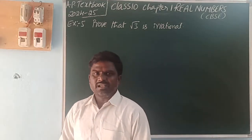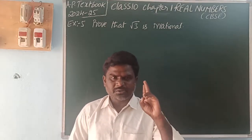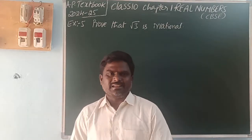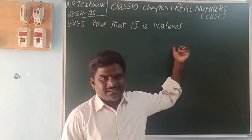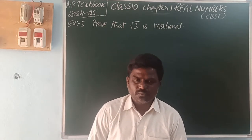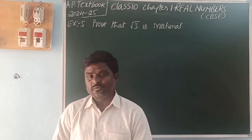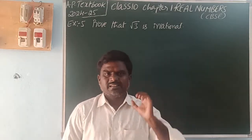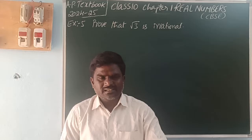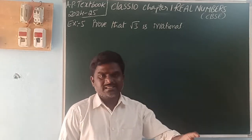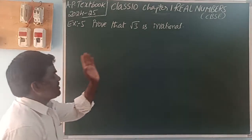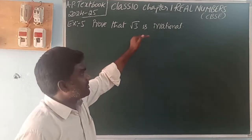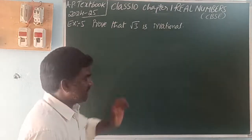In the real number system there are only two types of numbers: rational and irrational. Here they are asking us to prove that root 3 is irrational. We can do this by using the contradiction method. By using contradiction, we assume root 3 is a rational number, and finally we show that it cannot be — so root 3 is irrational.